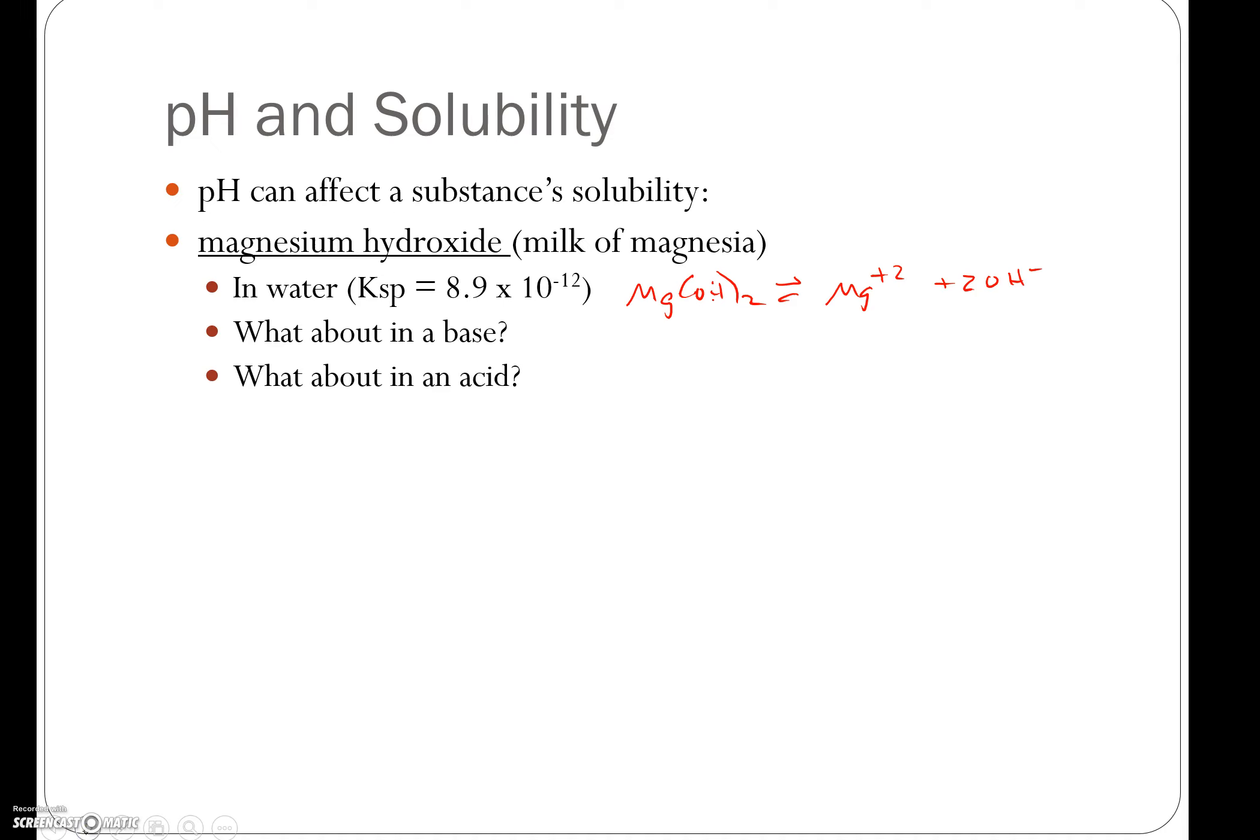If we were to add an acid to magnesium hydroxide, the hydrogen ions from the acid would react with the hydroxide ions and form water. Therefore, we decrease the concentration of hydroxide ions, which would cause a shift in the equilibrium towards the right and increase the solubility of magnesium hydroxide.